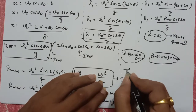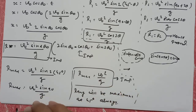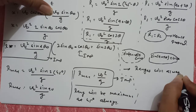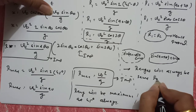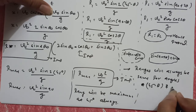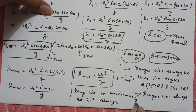Exam में याद रखना: short में, कौन से दो angles ऐसे होते हैं कि जिनमें ranges आपको same मिलेगी? Stone को ऐसे कौन से दो angles पर throw करोगे — so you will always get both the ranges same. So यह angles हैं: ranges will always be same for angle 45 minus theta and 45 plus theta. One more concept: ranges will always be same for angles theta and 90 minus theta.